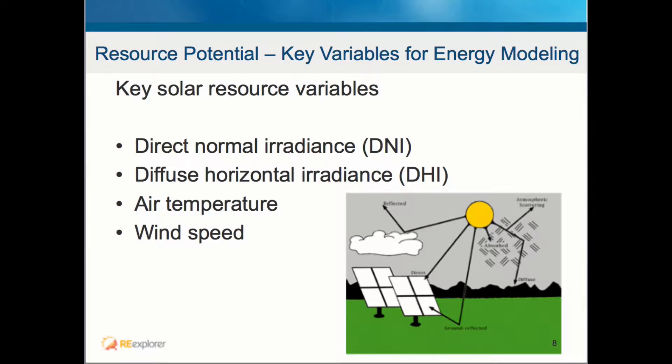Key variables for solar resource potential include direct normal irradiance (DNI), diffuse horizontal irradiance (DHI), air temperature, and wind speed. DNI is irradiance coming directly from the sun, while DHI is irradiance that has been scattered but can still be used for electricity generation. Air temperature and wind speed affect solar panel efficiency and therefore also affect potential electricity generation.